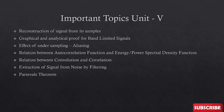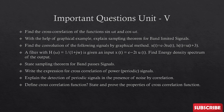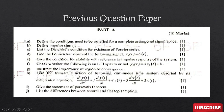Important topics from Unit 5 are: sampling, aliasing, signal extraction from noise by filtering, and Parseval's theorem. Important questions include: expressions for cross-correlation function, explain sampling theorem with a graphical example, and related problems. There are two problems highlighted here as well.